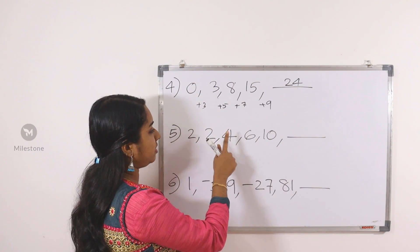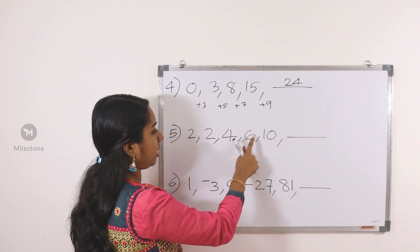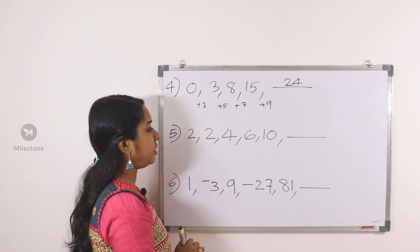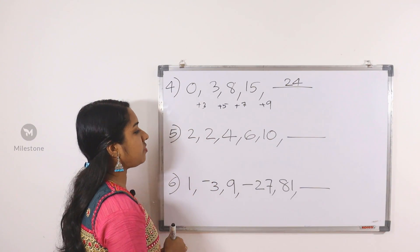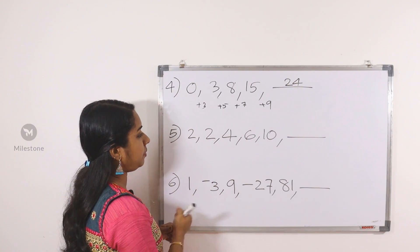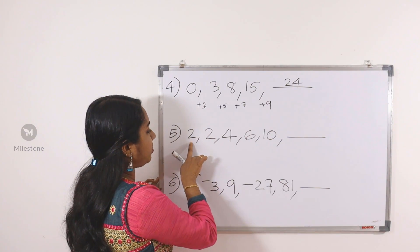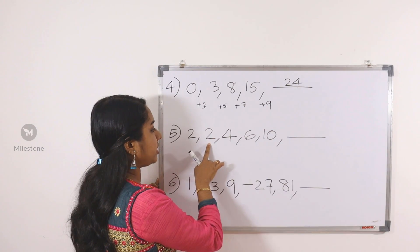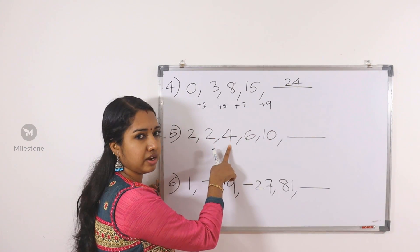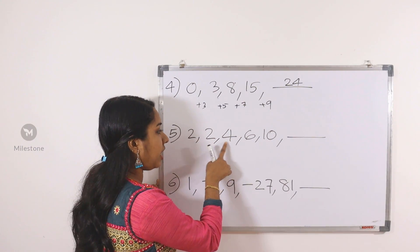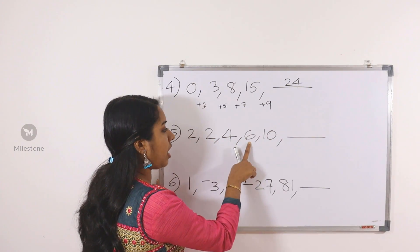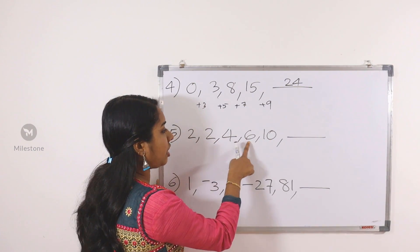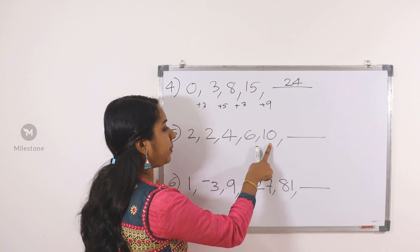Next question: 2, 2, 4, 6, 10. How do we find the relationship with this? 2 and 2 are equal to 4. 4 and 2 give 6. 6 and 4 give 10.